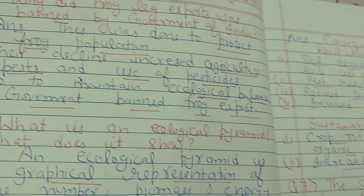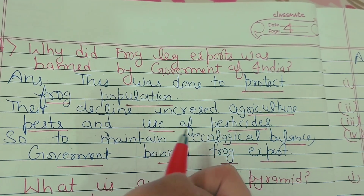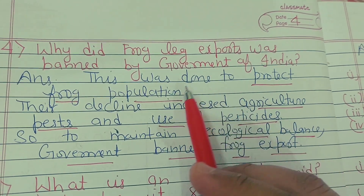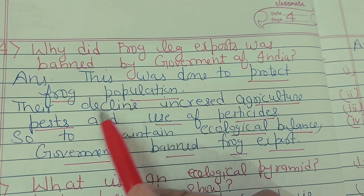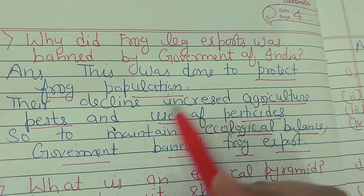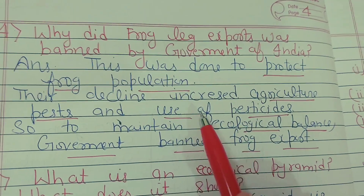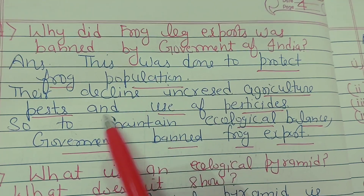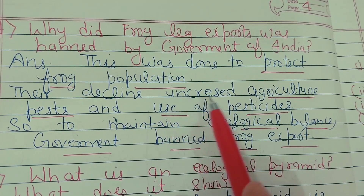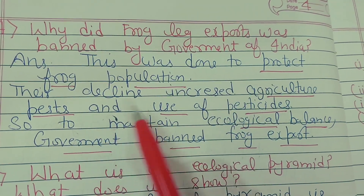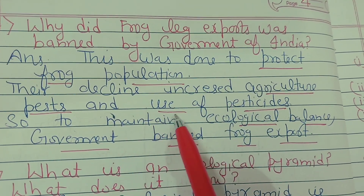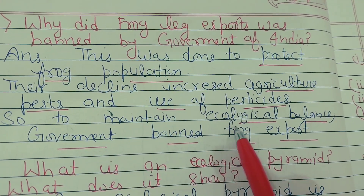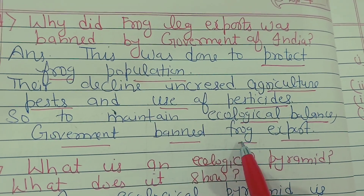Question number four: why was frog legs export banned by the Government of India? This was done to protect the frog population, because their decline increased agricultural pests. Frogs feed on insects and pests, so when the frog population declined, the population of insects and pests increased, requiring the use of harmful chemical pesticides. To maintain ecological balance, the government banned frog export.